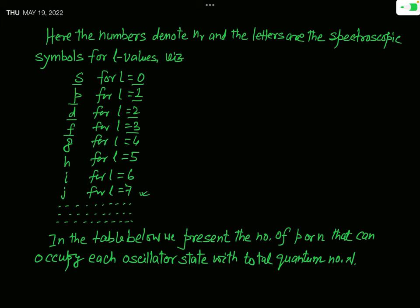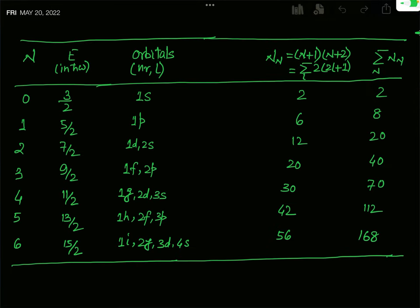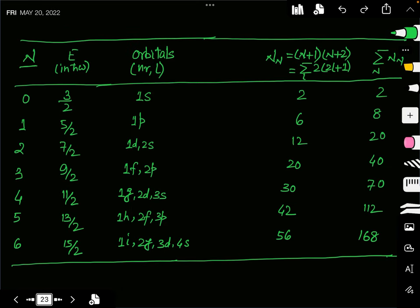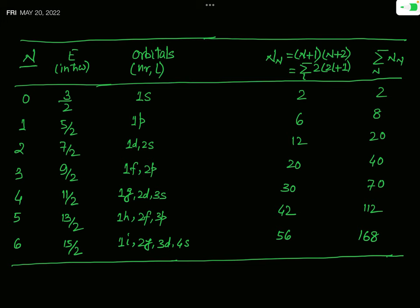In tabular form, the first column lists the total quantum number N from 0 to 6. The second column gives the energy in units of ħω. For N = 0, the energy is 3/2; for N = 1, it is 5/2. We treat ħω as a unit, so only the numerical prefactor is written.